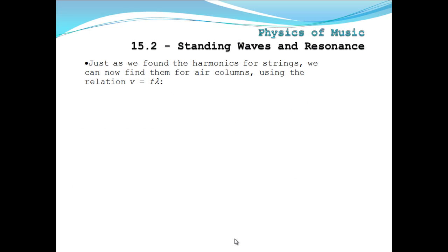So just as we found the harmonics for strings, we can now find them for air columns using the relationship. The same speed equation we had for the last chapter two. Velocity equals the frequency times lambda. We rearrange this to solve for frequency. And we get frequency sub n. So whatever frequency we're looking for. First, second, third, fourth, fifth, and so on. Equals the velocity of the wave divided by the wavelength.